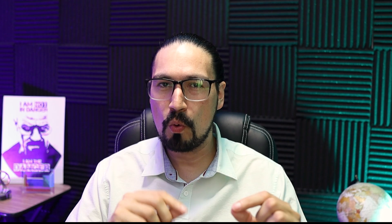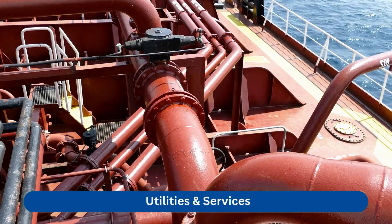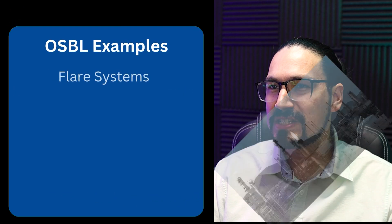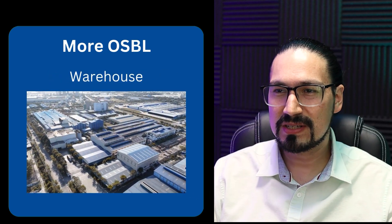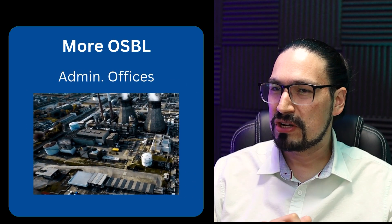Outside battery limits, OSBL, are all the things used to serve a purpose that are not core fundamentals of the process. A quick rule of thumb is to think of these as utilities, pipelines, off-sites, and infrastructure. Quick examples are roads, flare systems, cooling towers, steam generation, electrical substations, control rooms, warehouses, tank farms, pipe racks, administration buildings, and much more. These may not be as exciting as a distillation column or reactor cracker, but they are quite important because they serve our process.